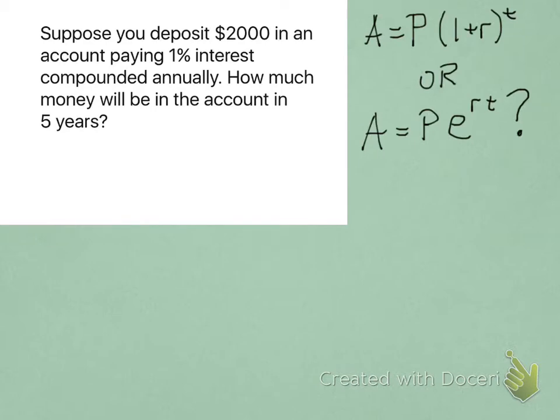So, with these types of problems, there are two different equations that you could be using. The top equation is if the account interest is compounded annually. The bottom one is if it's compounded continuously.